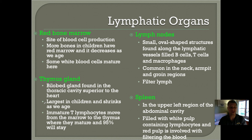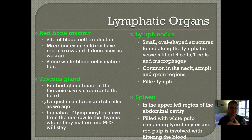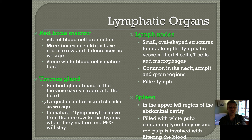The second organ is the thymus gland, a big gland that sits directly above your heart. It is largest in children and it shrinks as we age — it doesn't grow at the same rate as the rest of the body, so in an adult it is relatively smaller than in a child. Immature T lymphocytes move from the bone marrow to the thymus — T for thymus — and that's where they mature. 95% of them will actually just stay in the thymus for life.